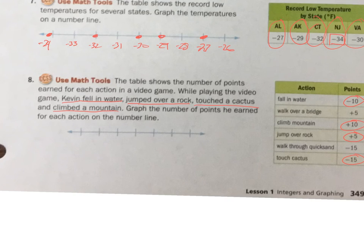Okay, so the lowest one is negative 15. And these are all by 5's. So I'm going to go negative 15, negative 10, negative 5, 0, 5, 10, 15. So let's, fell in the water is a negative 10. That one's here. Climbed mountain is a positive 10. Jump over a rock is a positive 5. And touch cactus, negative 15. There you go. Just graphed them.